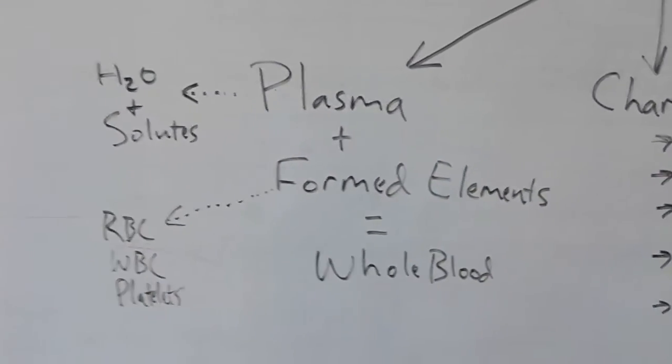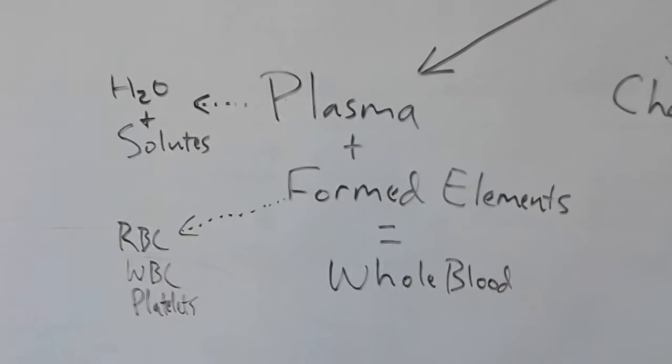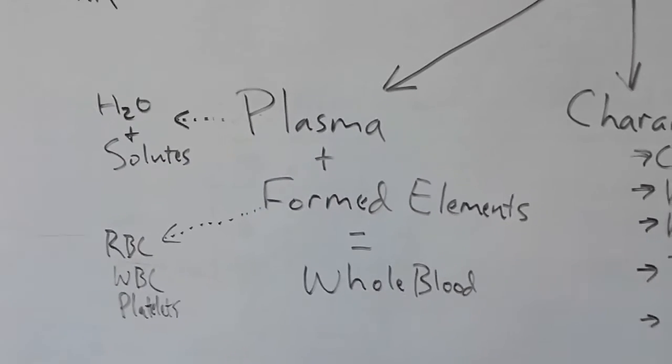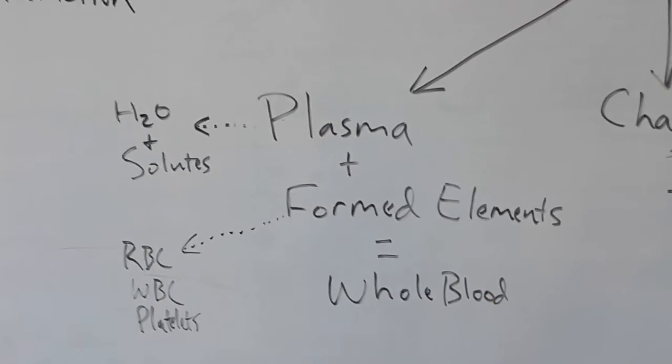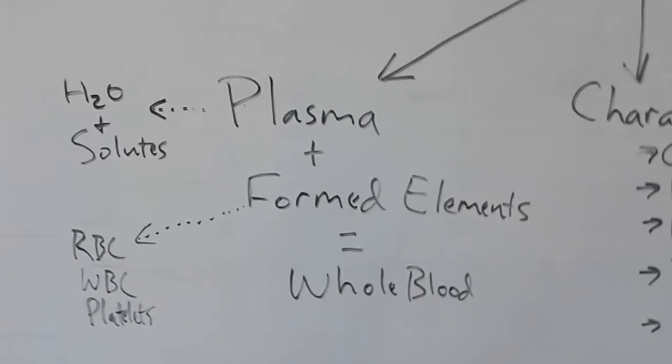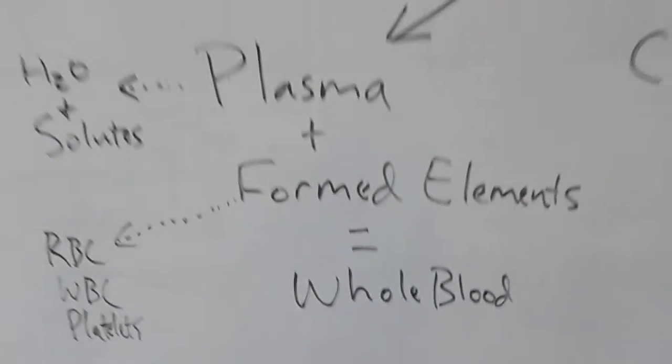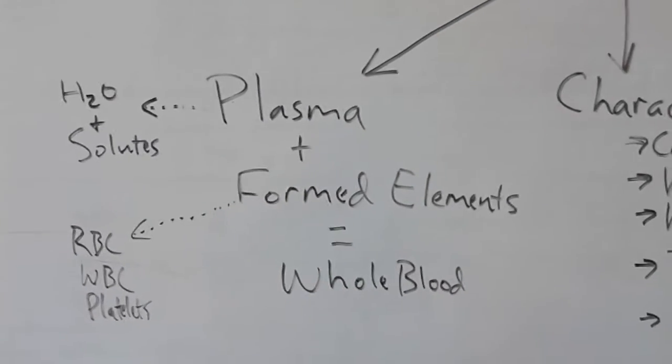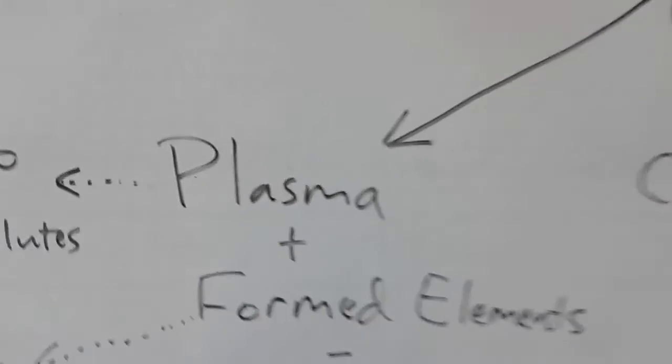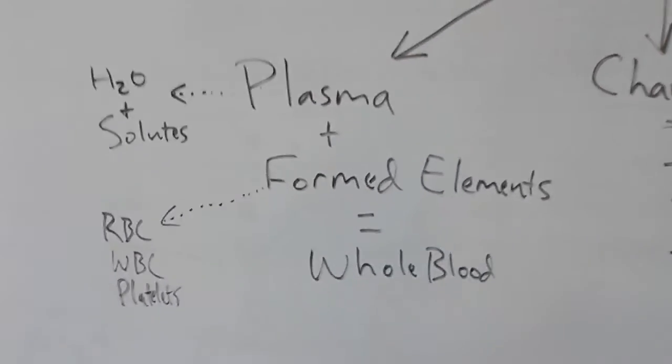So let's kind of do clockwise. We can start with the composition down here. When you're talking about blood and you're referring to blood that has actually been taken from an individual, has not been treated in a lab, hasn't been placed into a centrifuge and spun down and had things removed and had things added, if you talk about that, that's called whole blood. And whole blood is nothing more than plasma plus formed elements. So you're talking about the liquid portion of blood plus the solid portion of blood equaling whole blood.